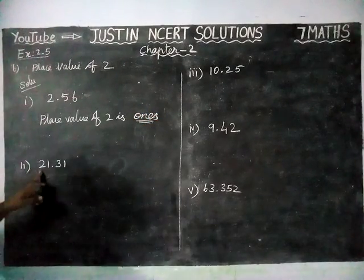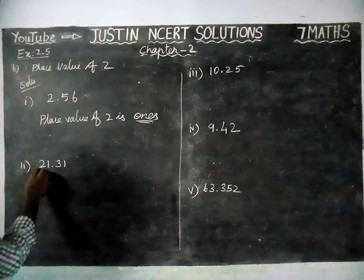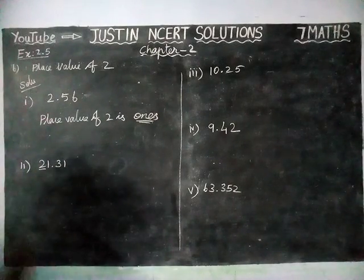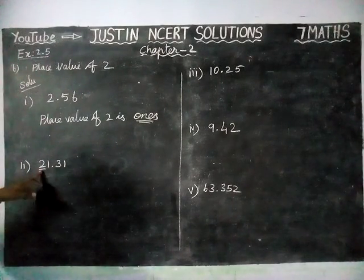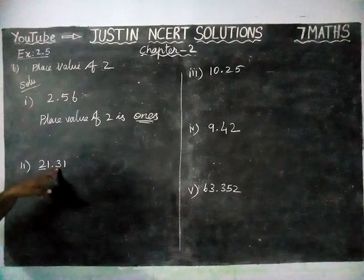And 21.31. Here, place value of 2 is tens place. And this is decimal point, then 10ths, 100ths.